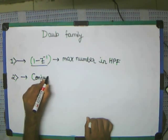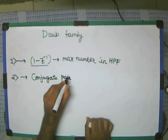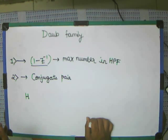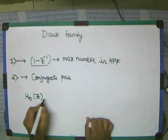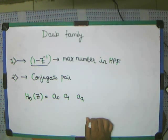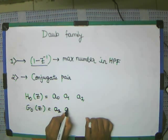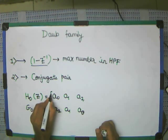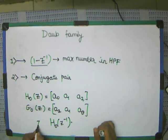The second thing we use in this DOP family is the concept of the conjugate pair. What does conjugate mean? It means that if h0(z) has coefficients a0, a1, a2, then the conjugate pair associated with it, which is g0(z), will be nothing but equal to a2, a1, a0 — or in other words, h0(z⁻¹) times z raised to the power minus b.